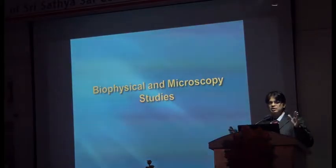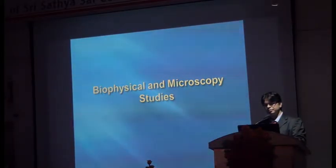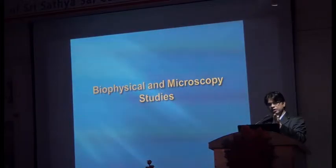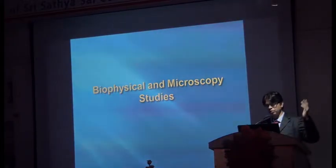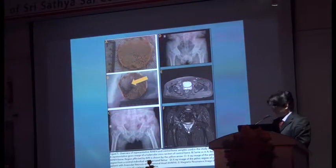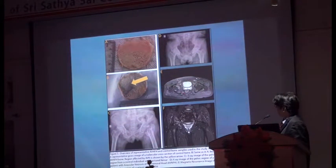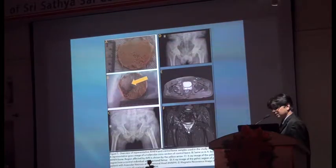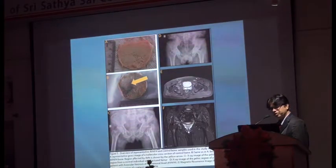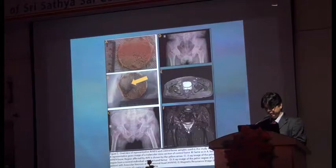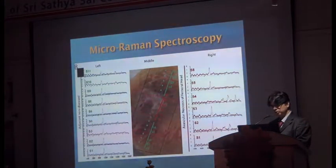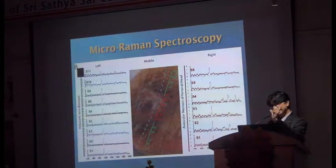Then we went on to the biophysical and microscopy study. For every AVN case we made axial sections, preserved them, and took them for different analyses. We correlated with MRIs to identify exactly where the lesion was. These sections were subjected to Raman spectrometry — a form of molecular fingerprinting. We performed micro-Raman spectroscopy for each sliver of the AVN specimen and for controls, then compared. We identified 18 spots along the cross-sectional area.